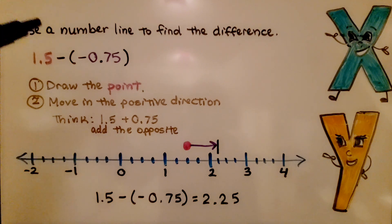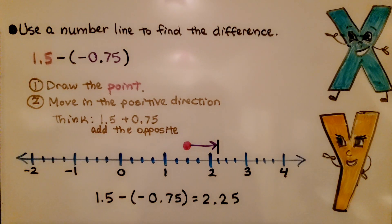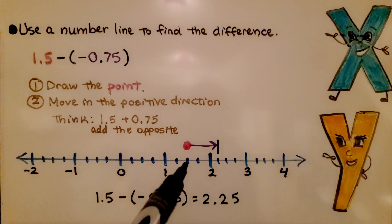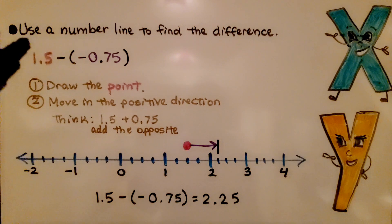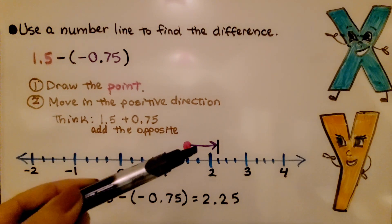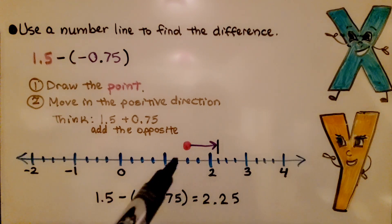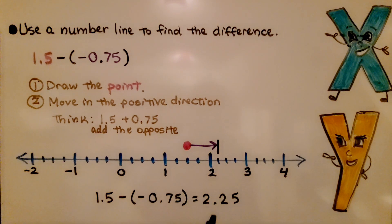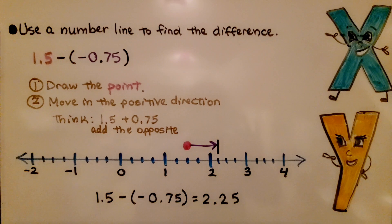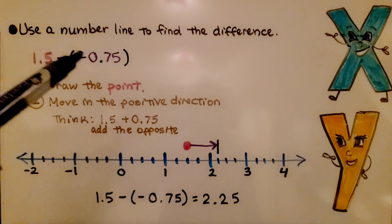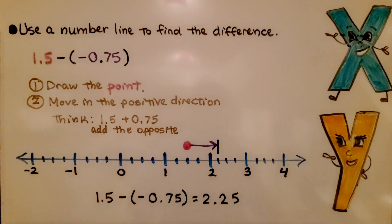Here it's telling us to use a number line to find the difference. We have positive 1 and 5 tenths and we're subtracting a negative 75 hundredths. We draw the point for the minuend — here's 0, here's 1, so that's 1 and a half, which is 1.5. Then we move in the positive direction, because we're subtracting a negative, by 75 hundredths, which is 3 fourths. The increments are split into one-fourth intervals: 1 fourth, 2 fourths, 3 fourths. That puts us at 2 and 25 hundredths, or 2 and one fourth. We can also add the opposite: 1 and 5 tenths plus 75 hundredths.